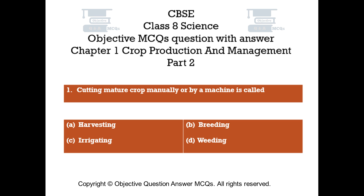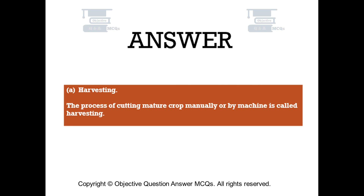Question number 1. Cutting mature crop manually or by a machine is called. Option A: Harvesting. Option B: Breeding. Option C: Irrigating. Option D: Weeding. The right answer is Option A, Harvesting. The process of cutting mature crop manually or by machine is called harvesting.